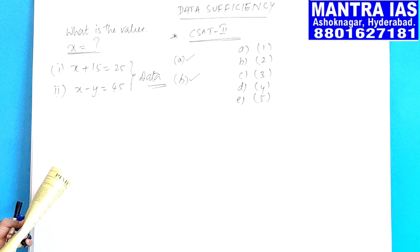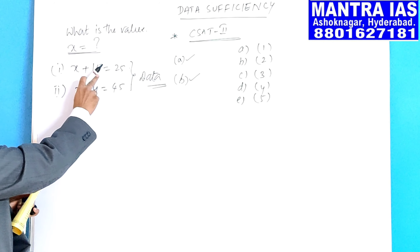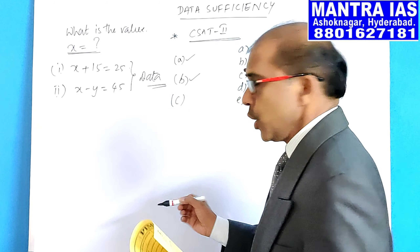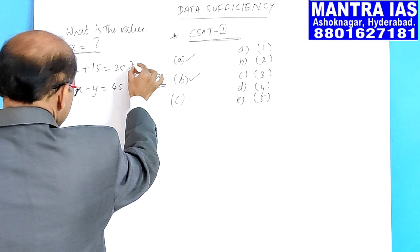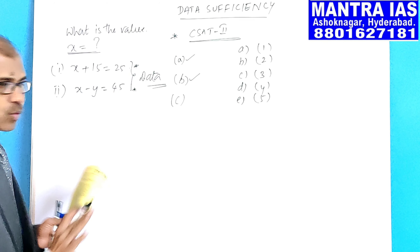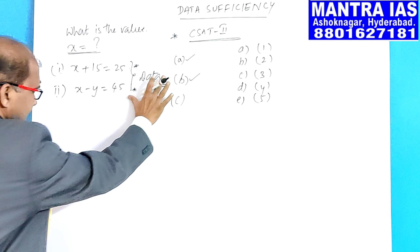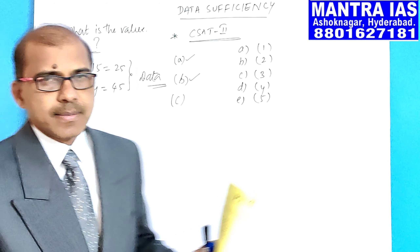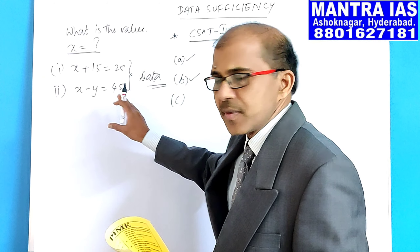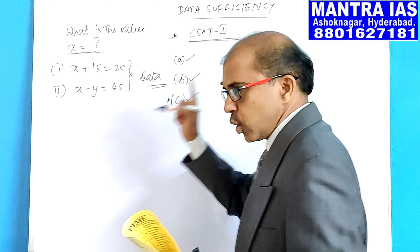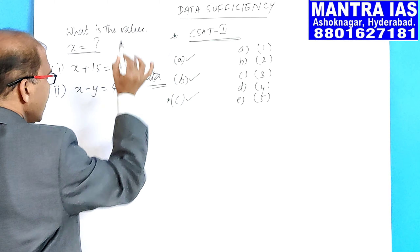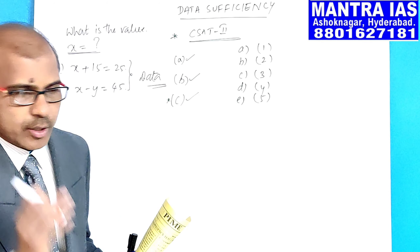If you get the answer by using the first statement alone, option A. If you get the answer by using the second statement alone, option B. Option C is a different case — you should not get the answer by using first statement alone or second statement alone individually. Only when you combine both statements together and get the answer do we mark option C.